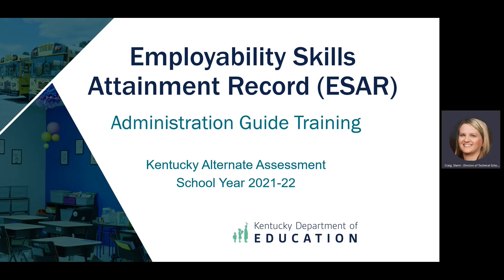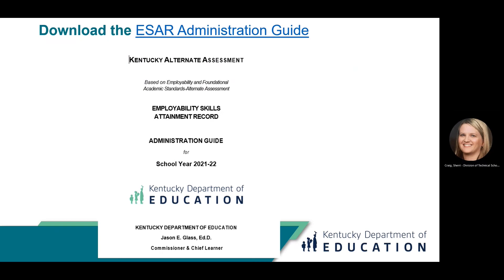Welcome to the Kentucky Alternate Assessment Employability Skills Attainment Record Administration Guide Training for School Year 2021-22. This module will walk you through the Employability Skills Attainment Record Administration Guide. Most slides will reference specific pages. Please print a hard copy or access an electronic version from the Kentucky Alternate Assessment Program webpage before continuing this training.